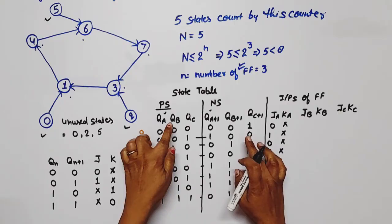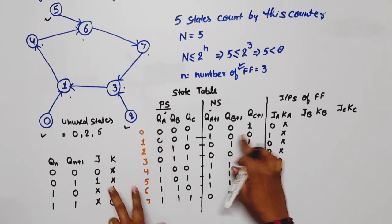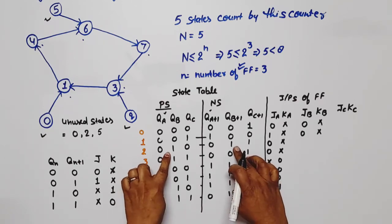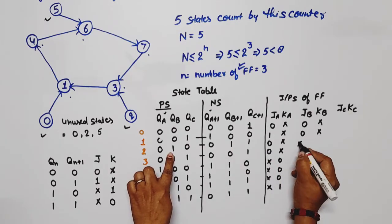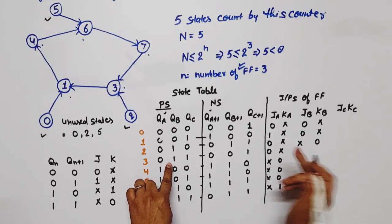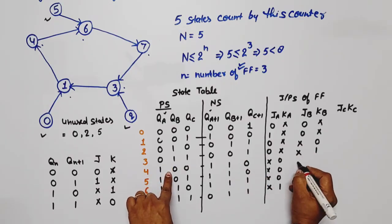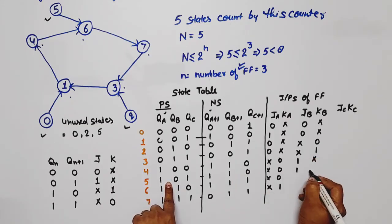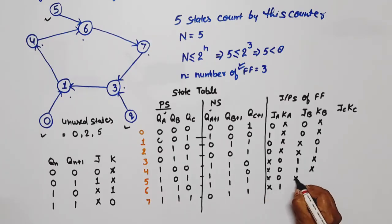Continuing with JB and KB values based on QB transitions. Then for JC and KC, observing QC and QC+1: 0→1 gives J=1,K=X; 1→0 gives J=X,K=1; 0→1 gives J=1,K=X; 1→1 gives J=X,K=0; 0→0 gives J=0,K=X; 1→0 gives J=X,K=1; 0→1 gives J=1,K=X; 1→1 gives J=X,K=0.